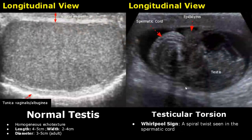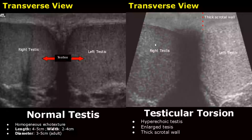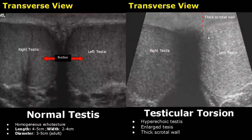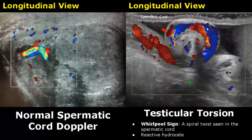In testicular torsion there is twisting of the spermatic cord which can cut off blood supply to the testis. One classic sign on ultrasound is the whirlpool sign — a spiral twist in the spermatic cord with alternating hyperechoic and hypoechoic rings. This transverse view shows both testes with torsion of the left testis — it is hyperechoic and larger than the normal right testis, with scrotal wall thickening. Here we have the whirlpool sign, seen better with color Doppler. There is also a hydrocele caused by the torsion.